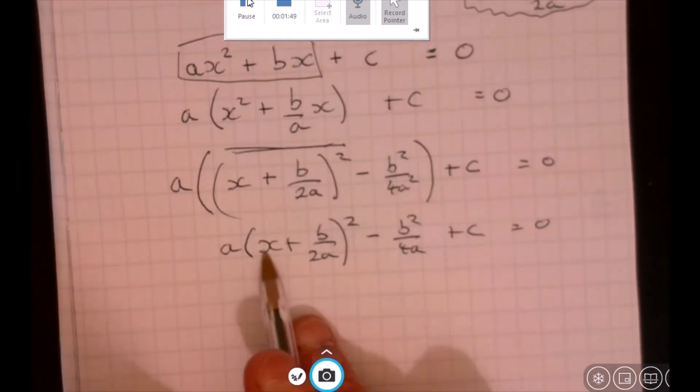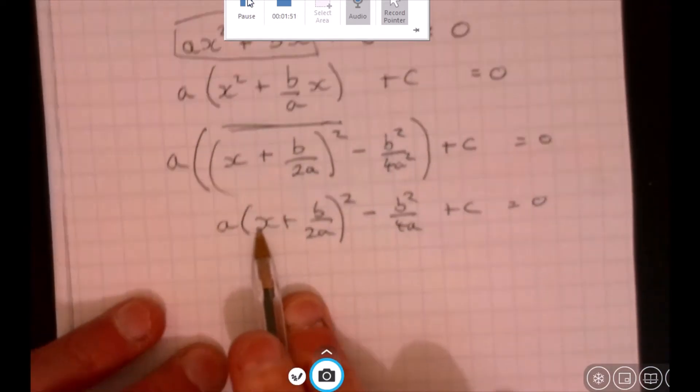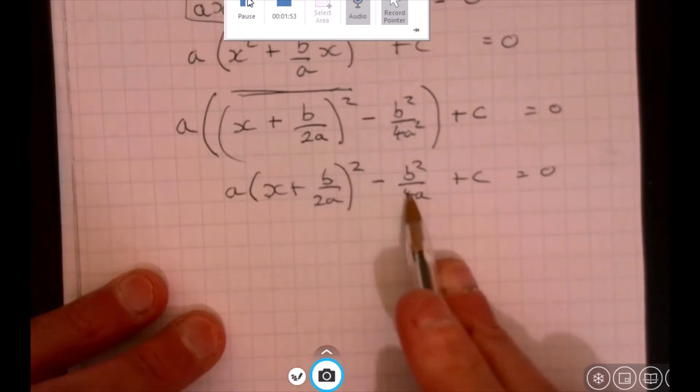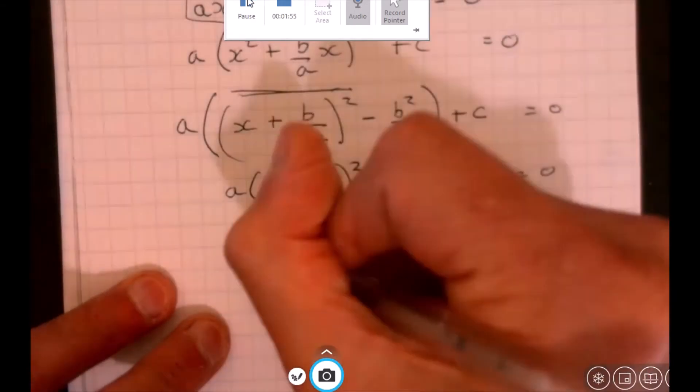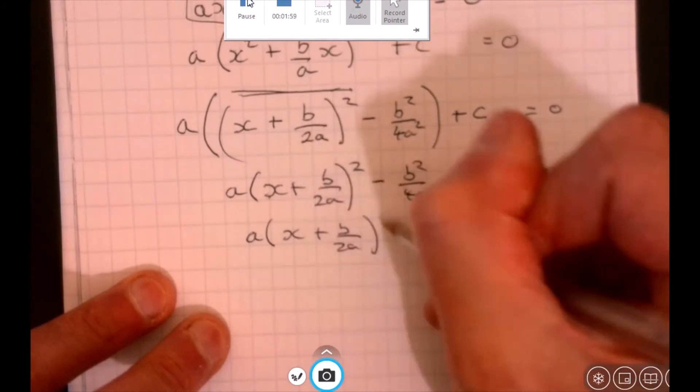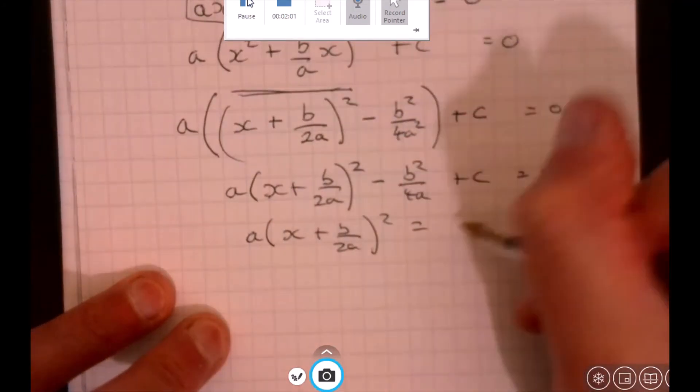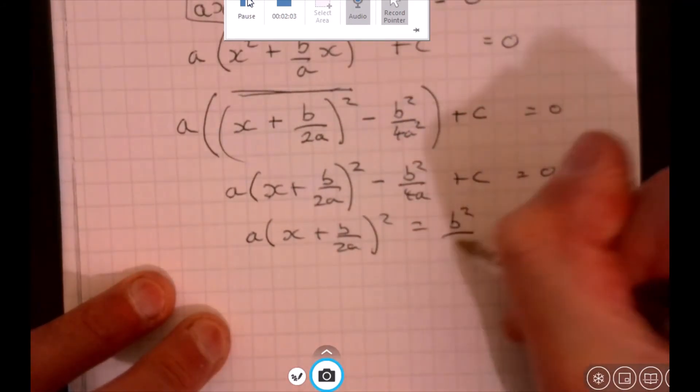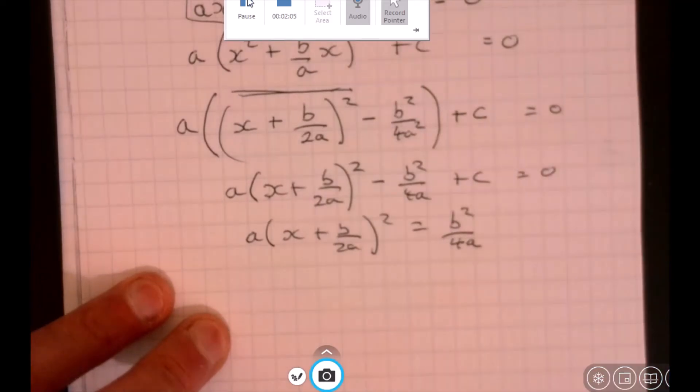Let's now try and maneuver this around so it says x equals. That's all we got to do. So we'll take that away from both sides. That gives us a x plus b over 2a squared equals, so what are we going to have? We're going to have b squared over 4a take away c.